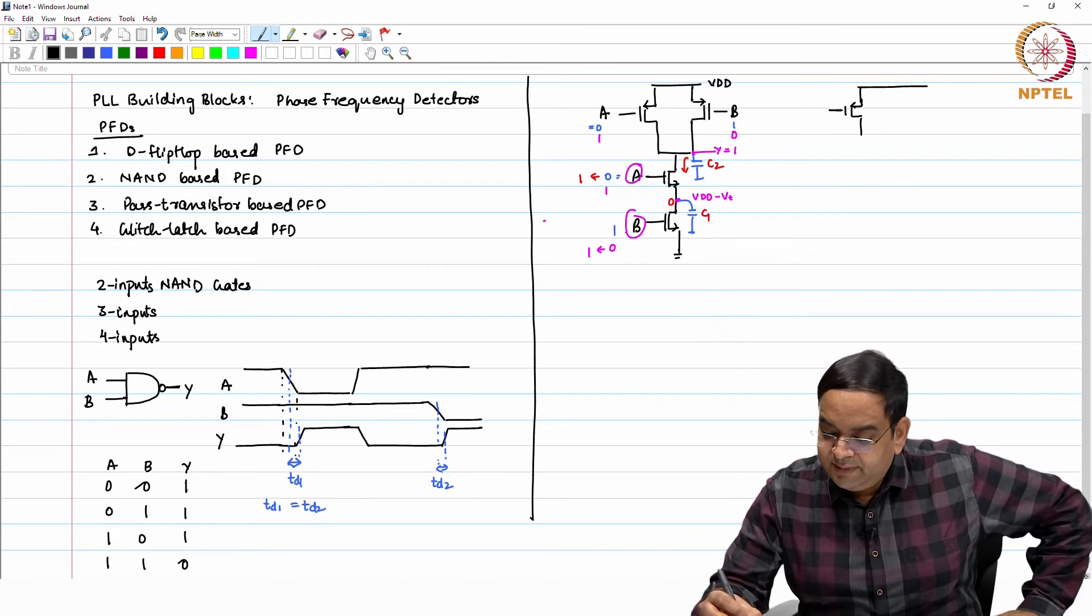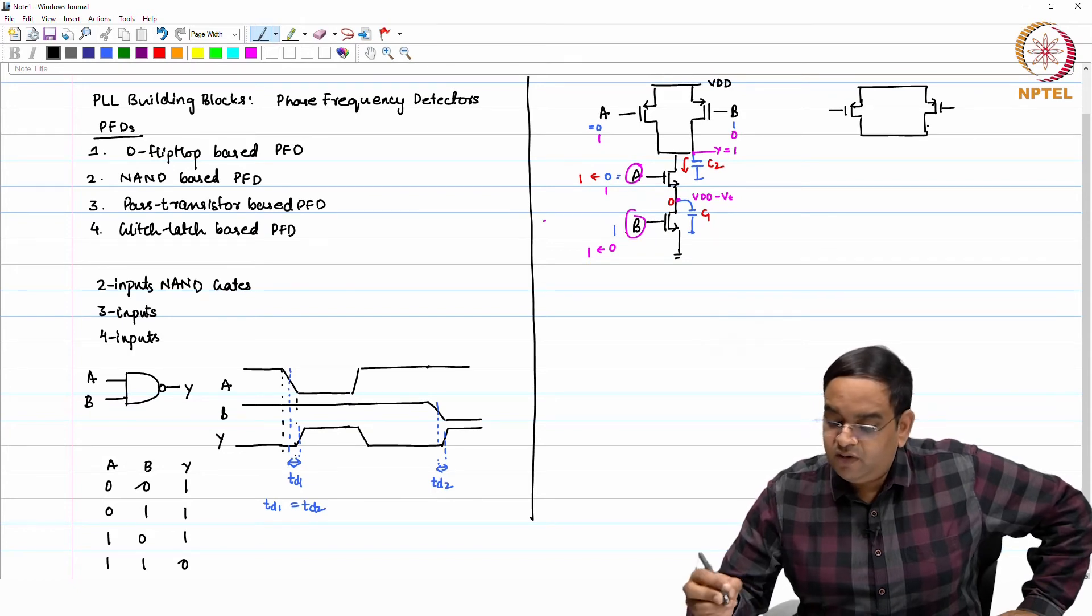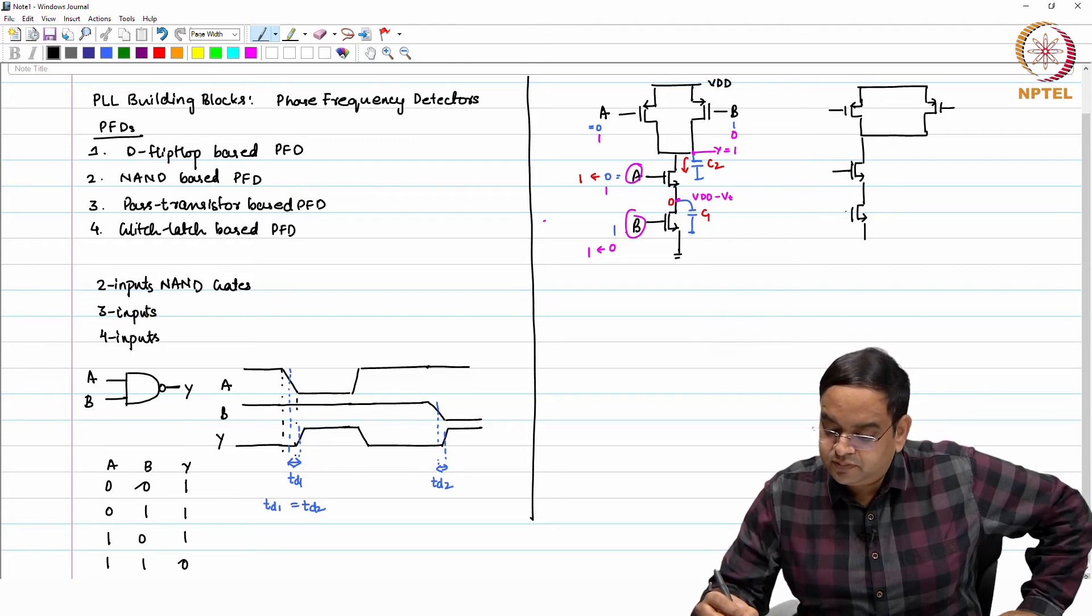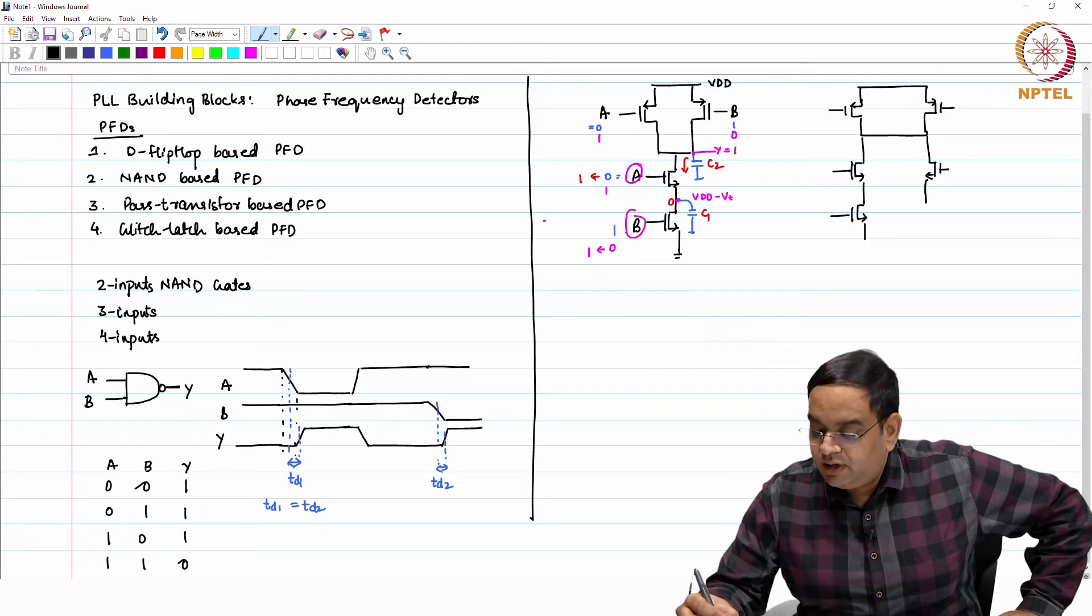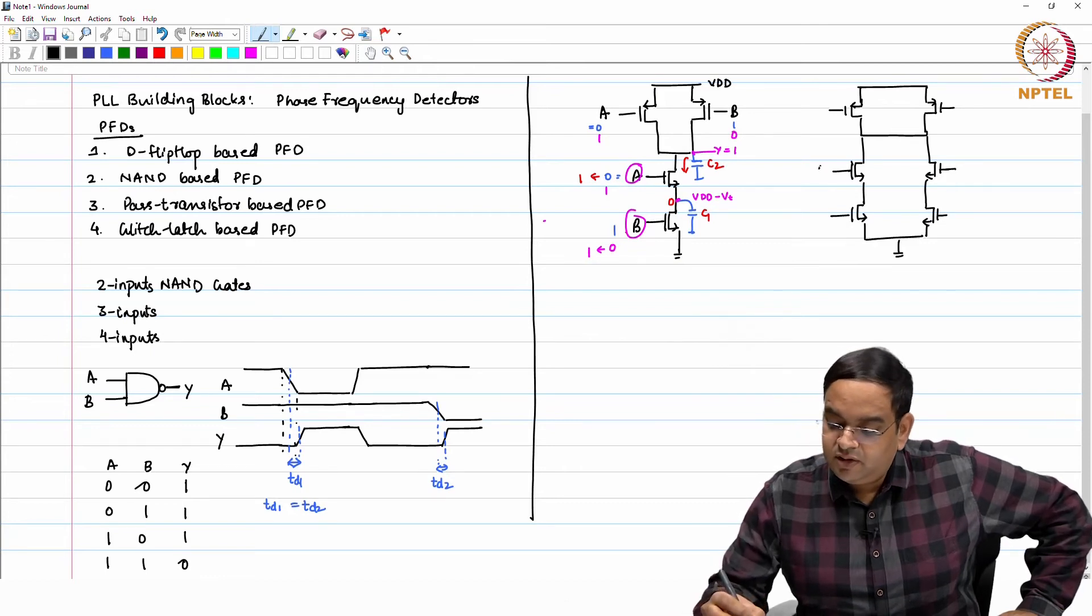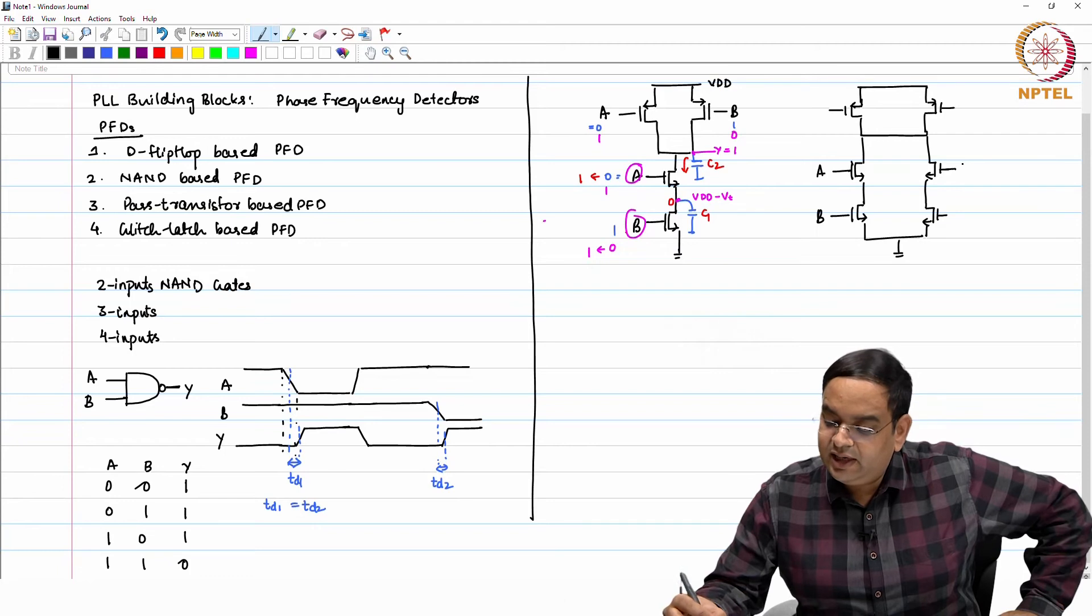What we would like to do is we want to make it symmetric with respect to the inputs. You can make it symmetric by using a symmetric gate where for each transition the same thing happens. I can do this: in place of using one branch, I will use two branches.